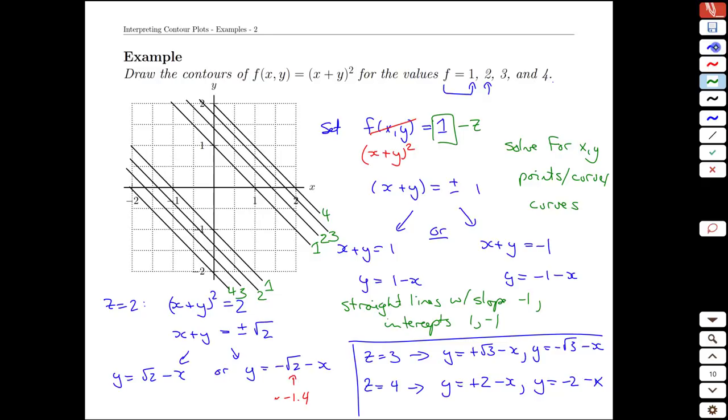We can actually add even one more, which is probably worth doing. If we have z equals 0, we're going to have (x + y)² equals 0. This time when we take the roots, there is no plus or minus, because we're just going to get x plus y equals 0, or y equals minus x. Again, a straight line, slope negative 1, but this time with 0 intercept. So the line right down the middle here would have a height of 0. And that's our first contour diagram constructed from a mathematical function in two variables.